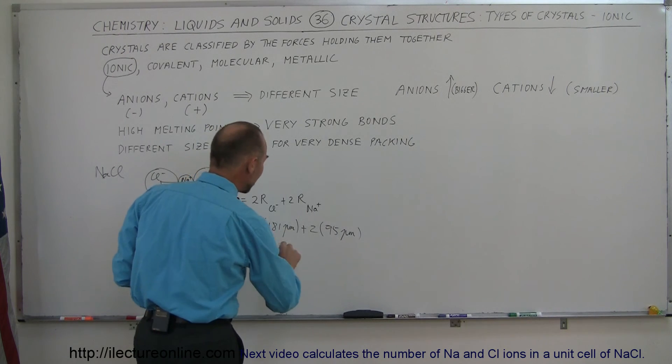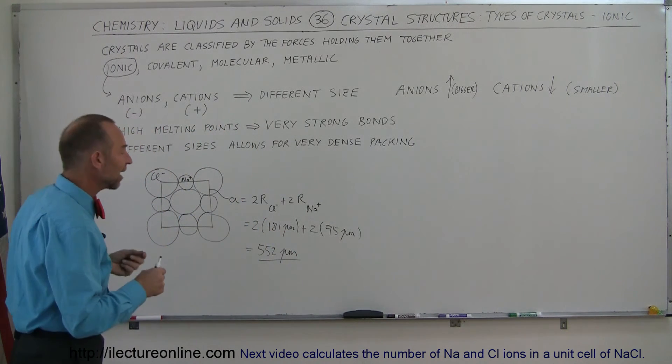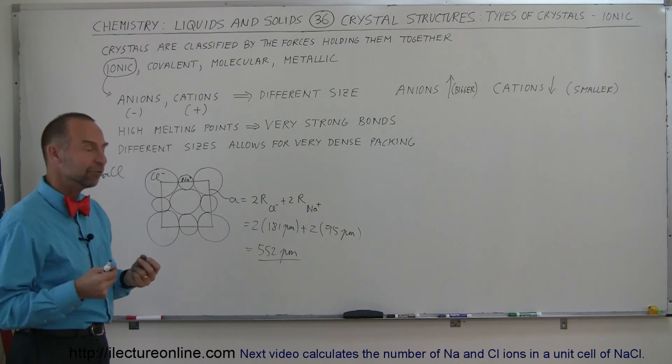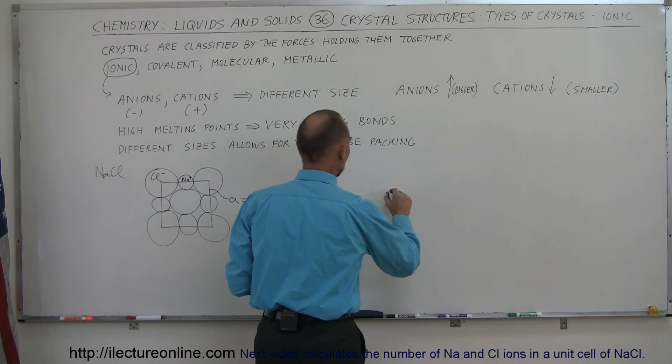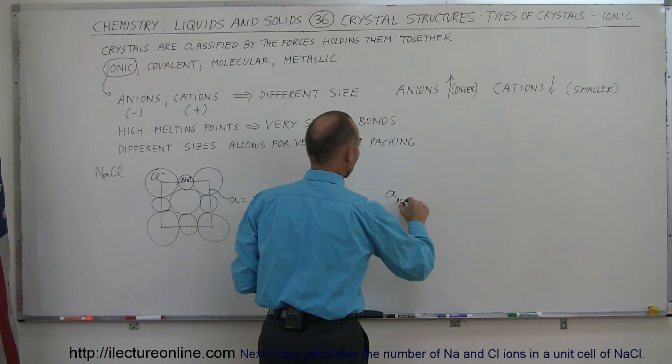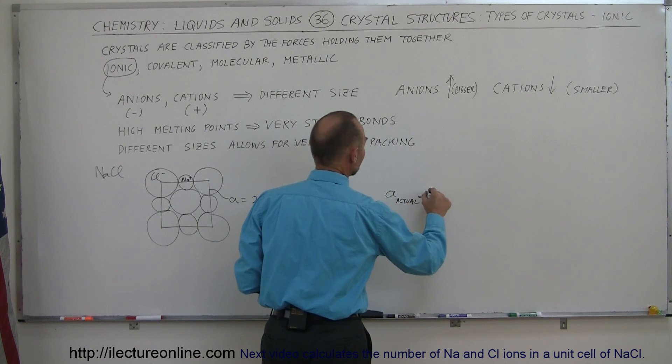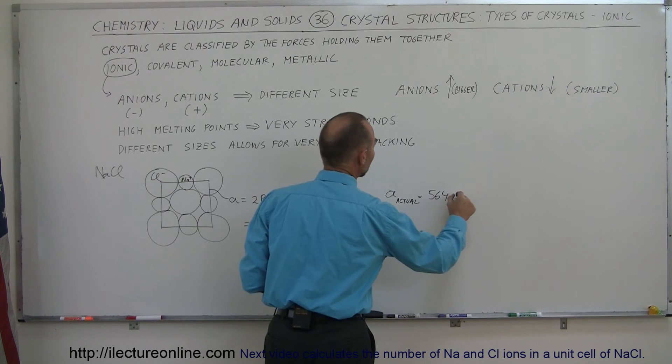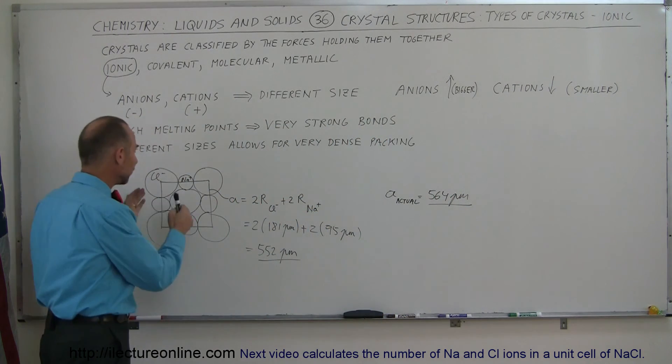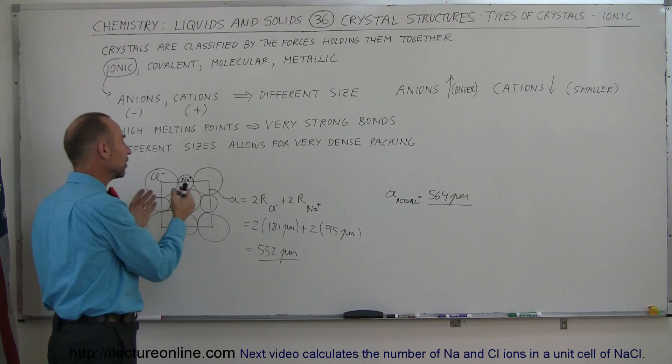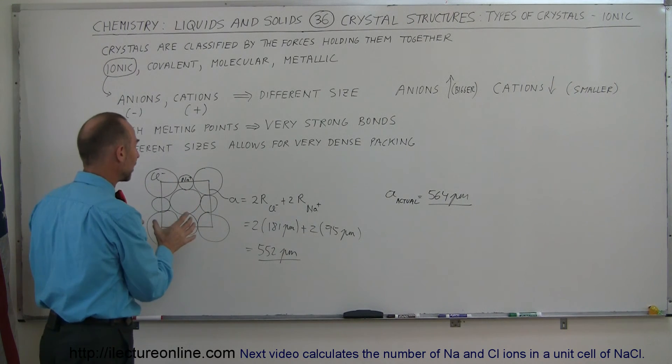Now that's based on the average size of these ions. It turns out, in real life, when we do x-ray diffraction on it, we find that the actual cell size, unit cell size, is equal to 564 picometers.